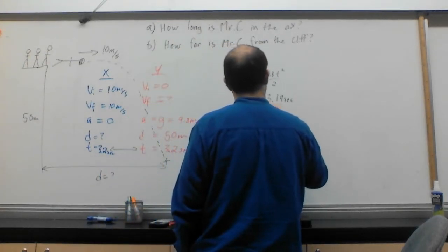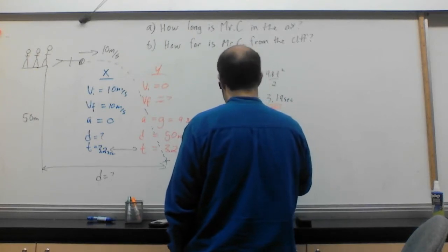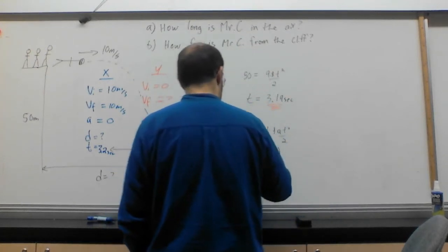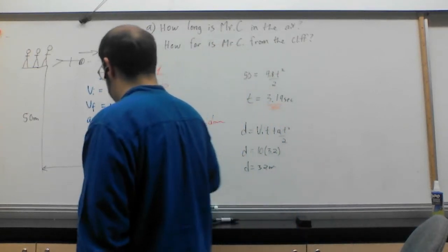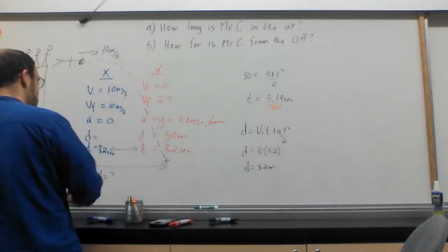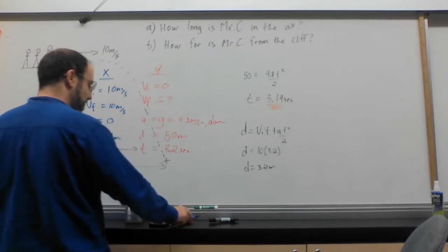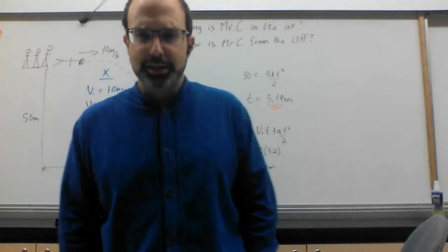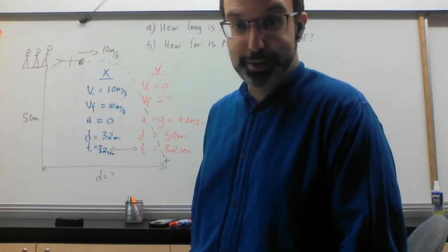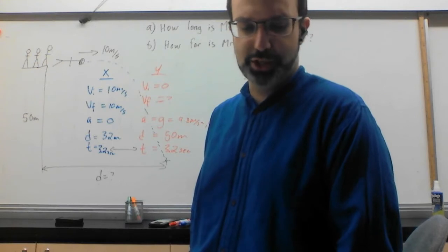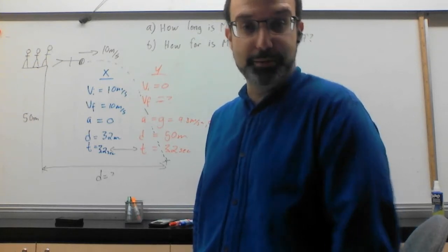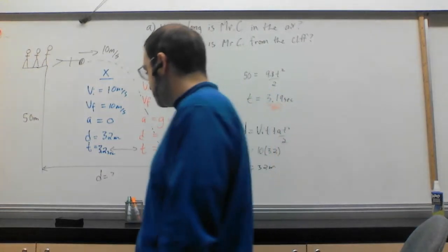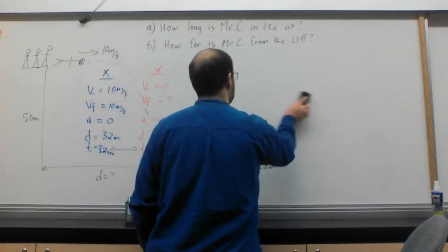D equals Vi T plus A T squared over 2. D is going to equal Vi, which is 10 times T, which is 3.2. And A is 0. So that goes away. So this becomes D of 32 meters. And that's it. That's all I had to do. I just took the time of the fall and use that to figure out how far I would go. What we can see is that all of these different things are connected to each other. They're only connected by time. That's the only thing that actually joins them. But in terms of the mathematics, it's just a bunch of one-dimensional kinematic problems. We just have to attach them together. And that's sort of the thing about two-dimensional kinematics. We take one-dimensional problems and we attach them together in order to make the two-dimensional answers. And that's because working in two dimensions directly is a lot more work.